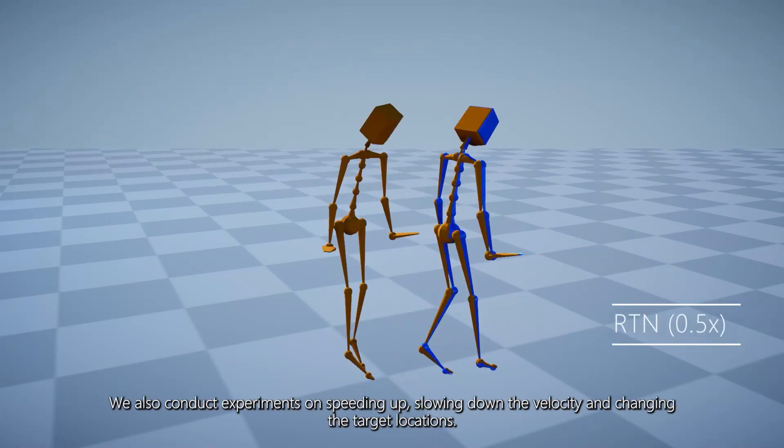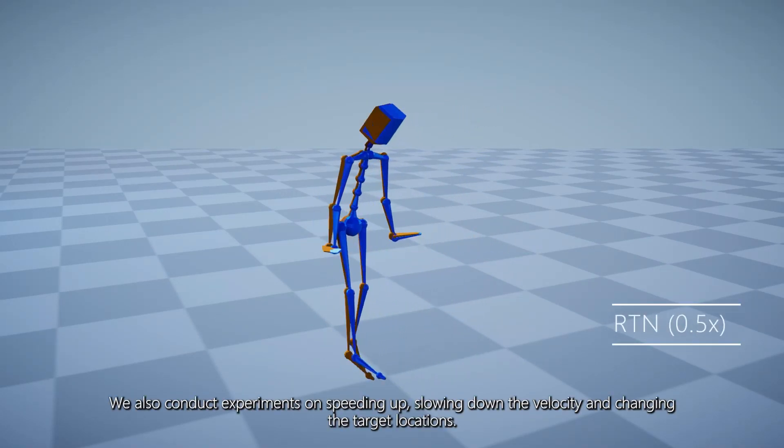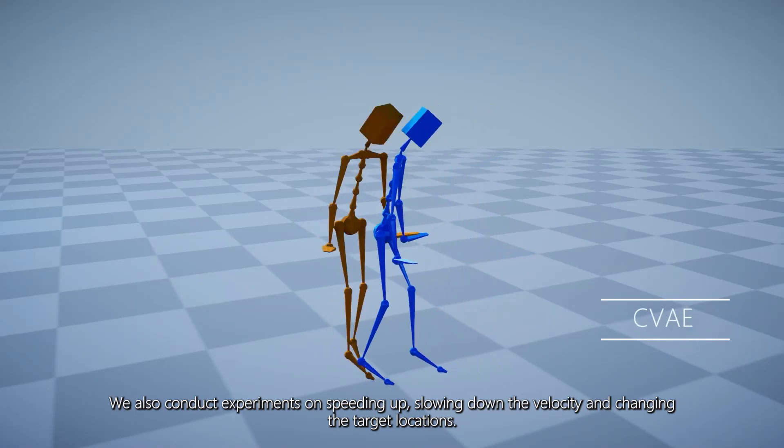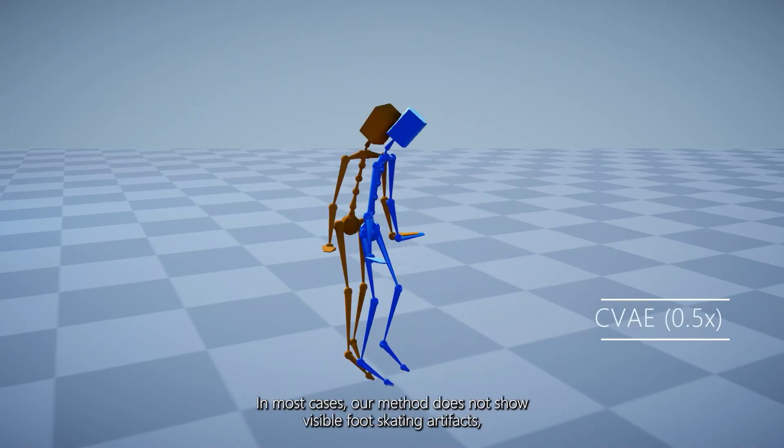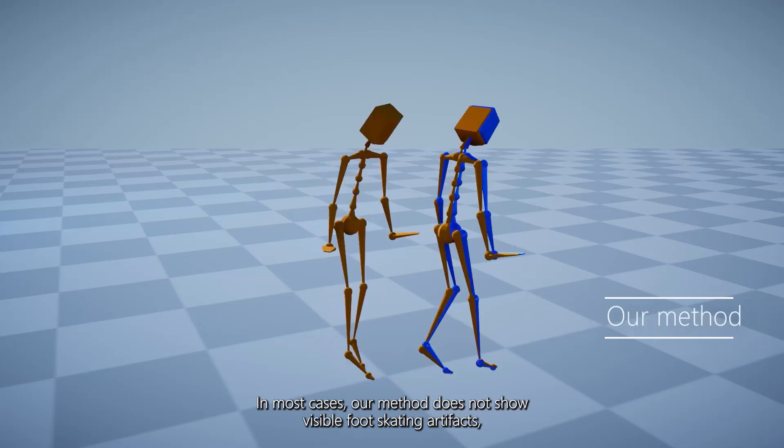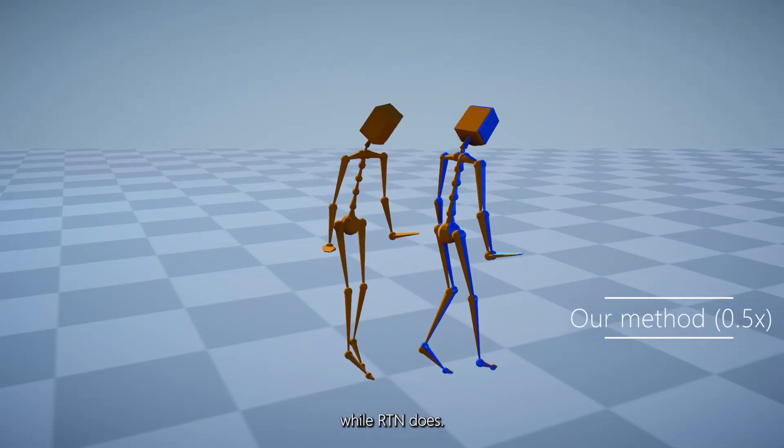We also conduct experiments on speeding up, slowing down the velocity, and changing the target locations. In most cases, our method does not show visible foot-skating artifacts, while RTN does.